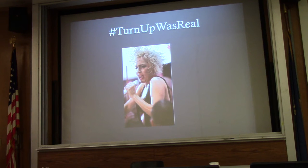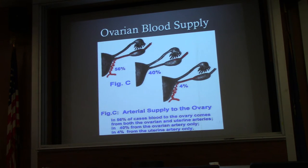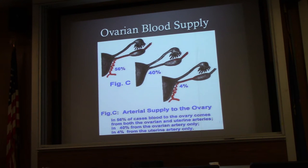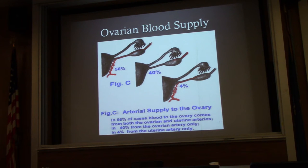Going back to ovarian torsion and pathophysiology, you have to understand the blood supply, because it's essentially a lack of blood supply to the ovaries causing pain. The majority of the time you'll see a dual blood supply — this is very important when diagnosing ovarian torsion. Usually there's blood supply from both the uterine and the ovarian arteries. A small percentage of the time it's just the ovarian arteries, and a very small percentage just the uterine arteries.